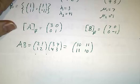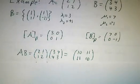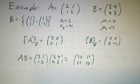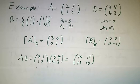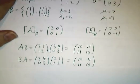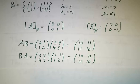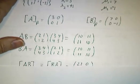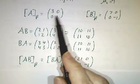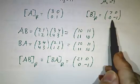And now we discover something interesting about products. If you multiply A times B, you get (10,11,11,10). And if you multiply B times A, you get the same thing.